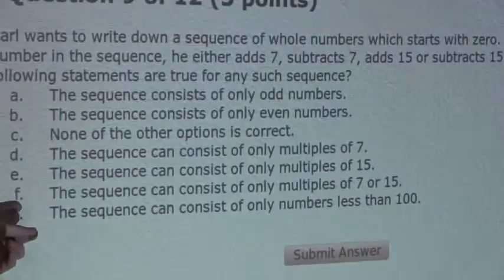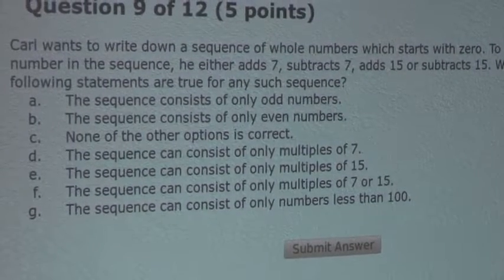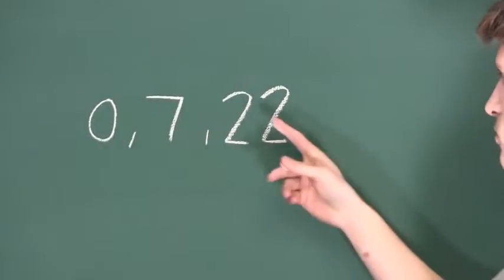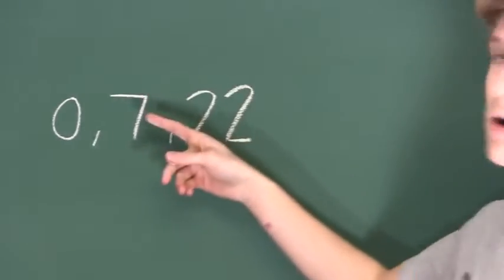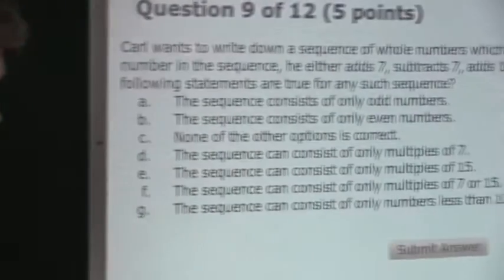And now option F. The sequence can consist of only multiples of 7 or 15. Well, again, in the same sequence, as a counterexample to that statement, we can see 22 is not a multiple of 7 and not a multiple of 15. So that is also wrong.